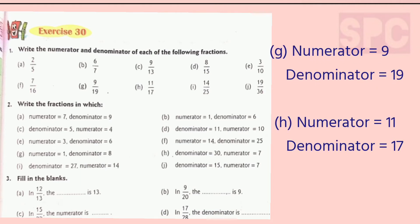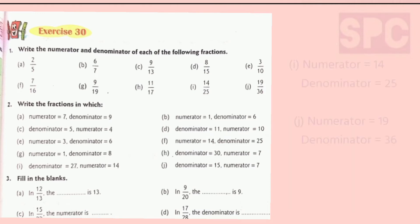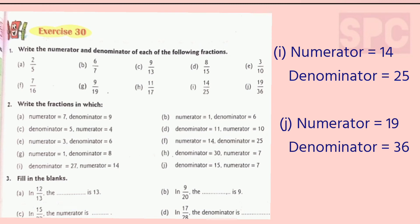In part G, the numerator is 11 and denominator is 17. Part I, the numerator is 14 and denominator is 25. Part J, the numerator is 19 and denominator is 36. So children, you can see it is very simple. The numeral which is written above the line is the numerator and the numeral which is written below the line is called the denominator. So whatever fraction is given to you, you can easily write the numerator and the denominator.